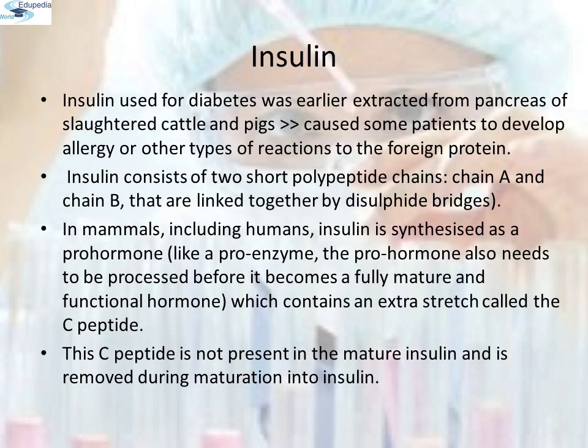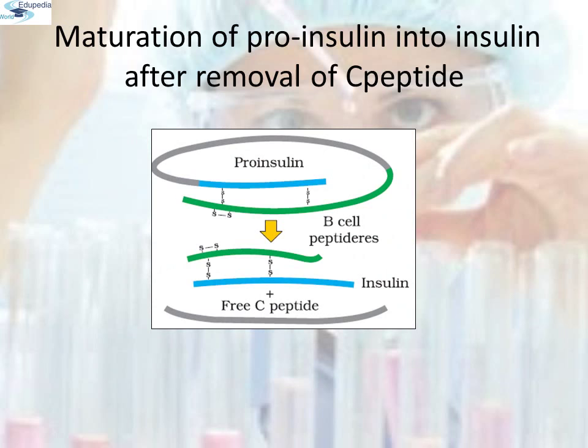Insulin consists of two short polypeptide chains, chain A and chain B, that are linked together by disulfide bridges. In mammals including humans, insulin is synthesized as a pro-hormone. Like a pro-enzyme, the pro-hormone also needs to be processed before it becomes a fully mature and functional hormone. It contains an extra stretch called the C-peptide. The C-peptide is not present in mature insulin and is removed during maturation. This is the diagrammatic representation of the maturation of pro-insulin into insulin after removal of the C-peptide.